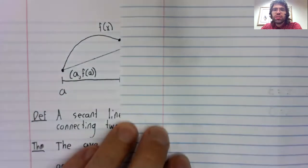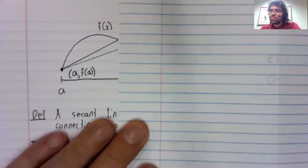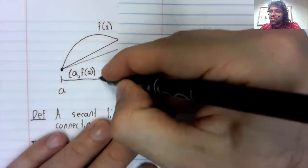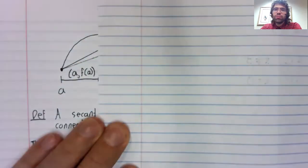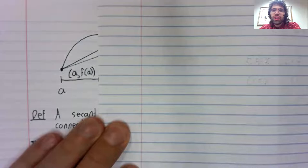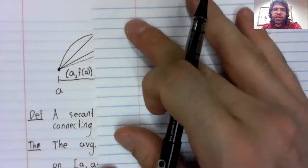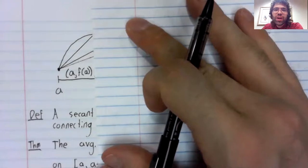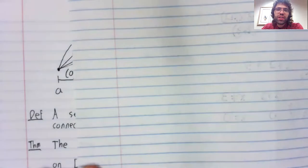As h gets closer and closer to zero, the average rate of change gets closer and closer to the instantaneous rate of change.